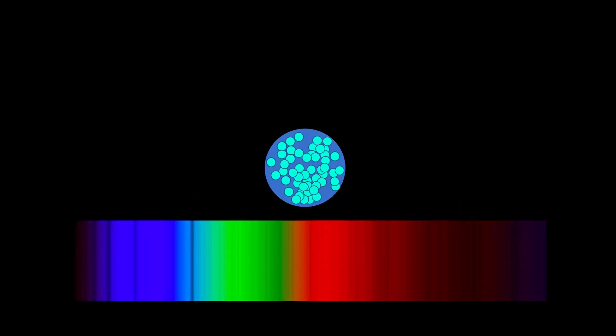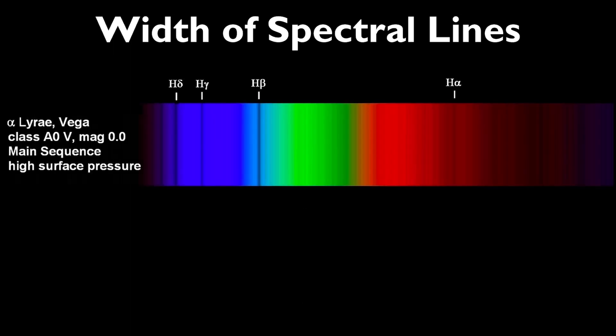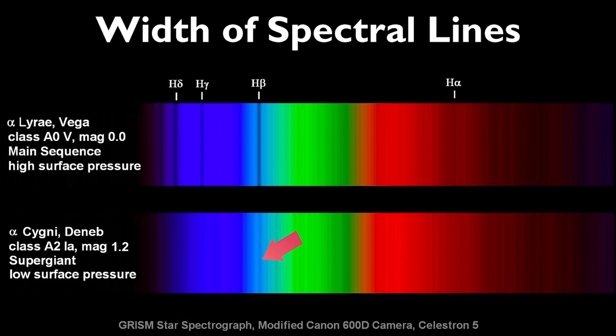The width of these absorption lines in a star's spectrum can tell you exactly what type of a star it is. Main sequence stars have a high density, high pressure atmosphere which creates wide or huge absorption lines. In supergiants, the low density, low pressure atmospheres create narrow or little absorption lines. In some cases, the spectral lines in the spectra of supergiants are so faint that they're barely noticeable.